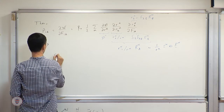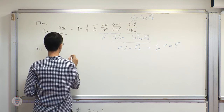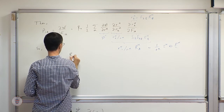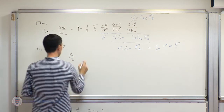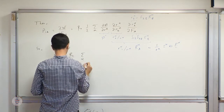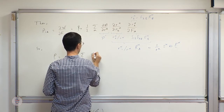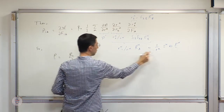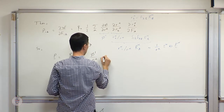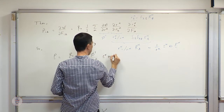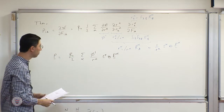The first Piola-Kirchhoff stress tensor equals beta-naught over 2 times the sum over alpha of phi-prime divided by r_alpha, times the tensor product of small r_alpha with capital R_alpha.